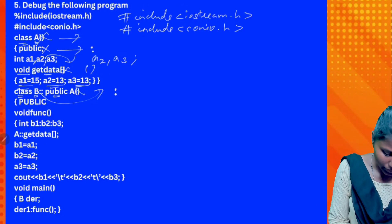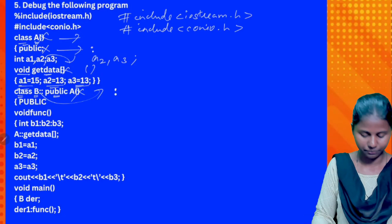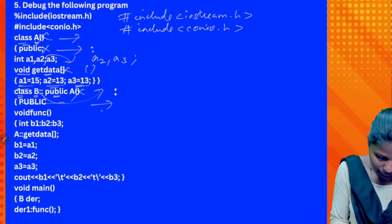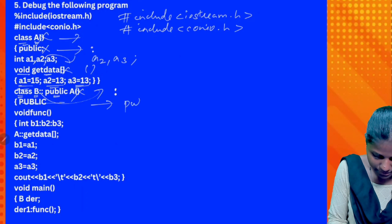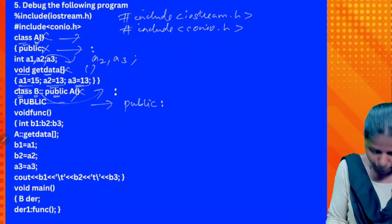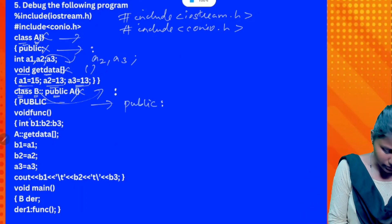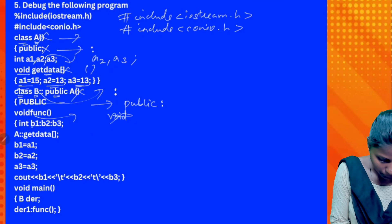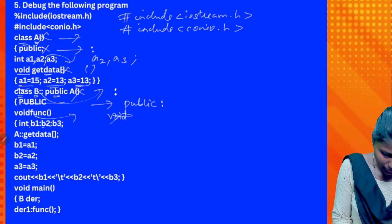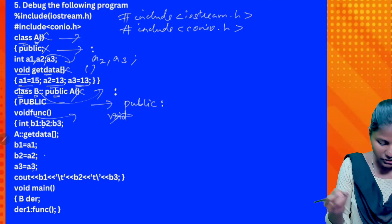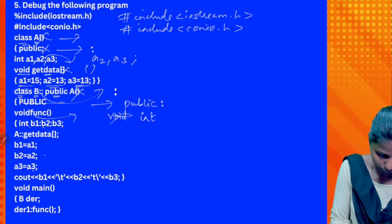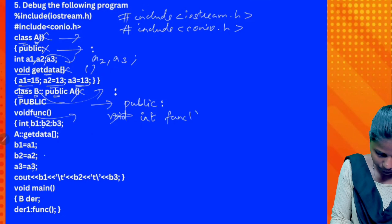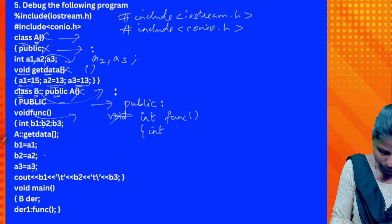So in the brackets, this is a colon. Next — public, case sensitive, small letters use. Plus colon. Next, void function gap — this is void because we are initializing. We will initialize, so we will do int — int function, int b1.